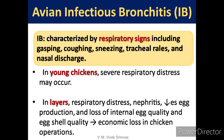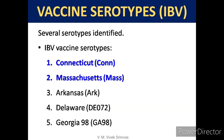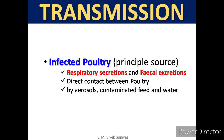In layers, the signs include respiratory distress, nephritis, drop in egg production, and loss of internal egg quality and eggshell quality, which leads to economic loss in chicken operations. The vaccine serotypes of IBV include Connecticut, Massachusetts, Arkansas, Delaware, and Georgia 98 serotype.